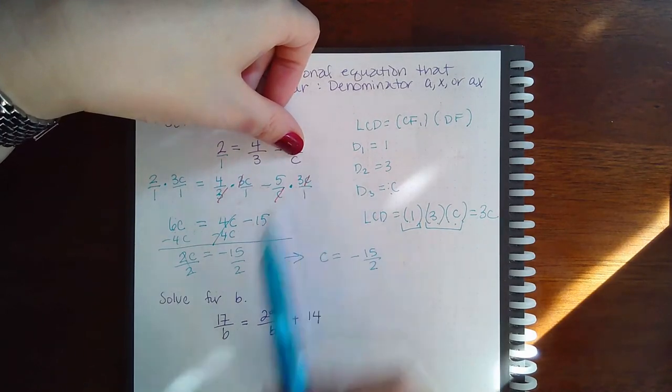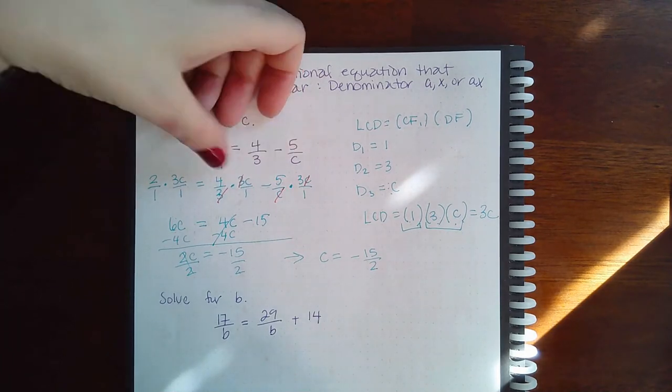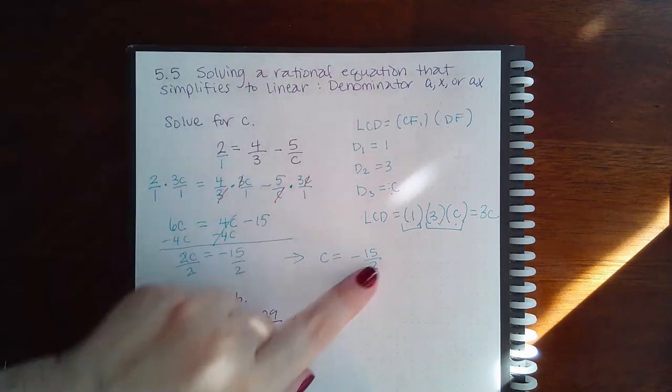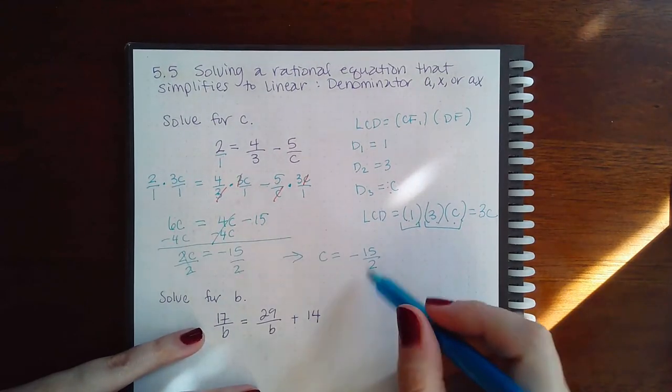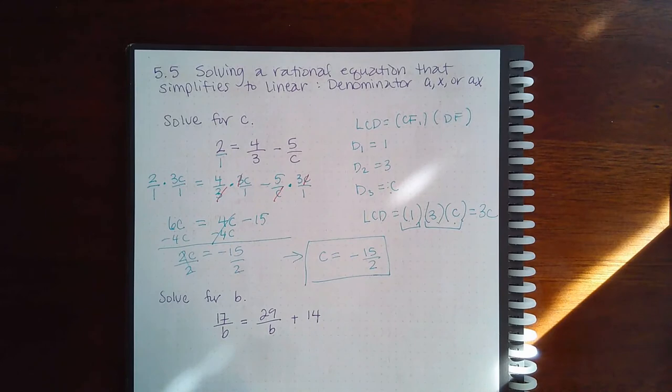So, when I plug in the value for C, I get negative 15 over 2. That's also not 0. So, as long as none of the denominators will become a 0 with this potential solution, that is when it becomes an actual solution. And you can say this is the solution to the equation.